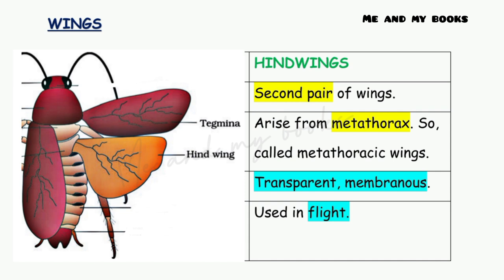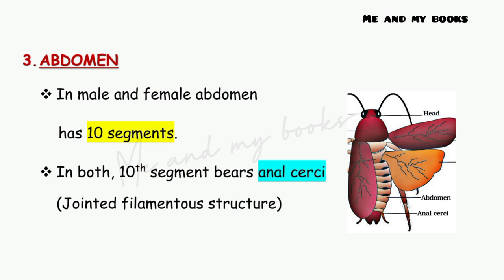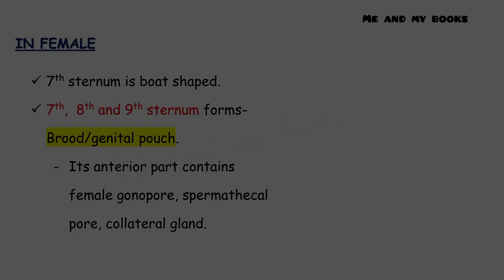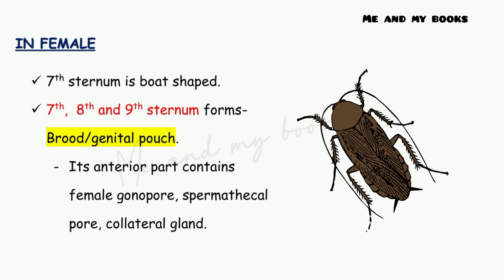In both male and female, the abdomen has 10 segments. The 10th segment bears anal cerci, which are jointed filamentous structures. In the case of the female, the 7th sternum is boat-shaped, and the 7th, 8th, and 9th sterna together form the brood or genital pouch, which has a reproductive function.